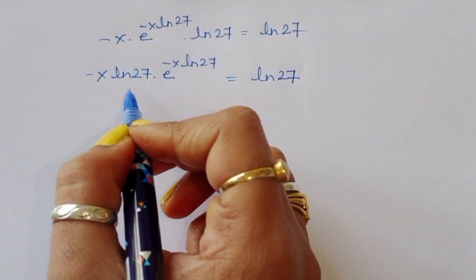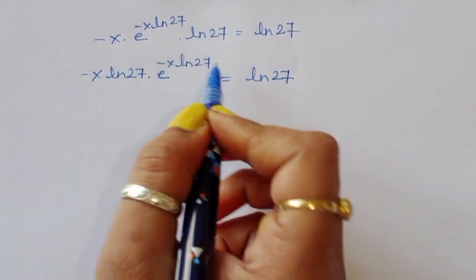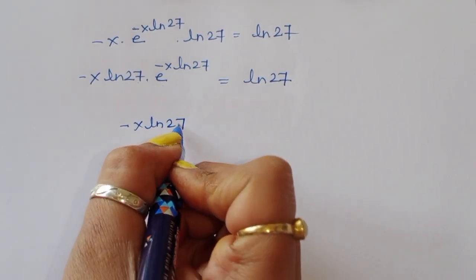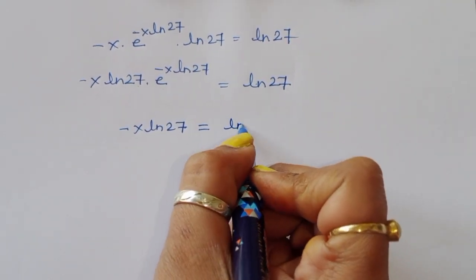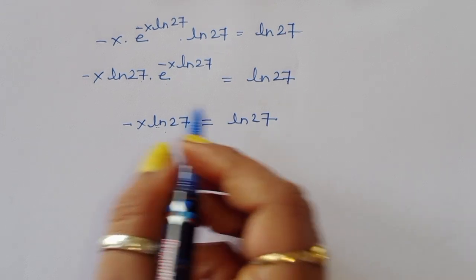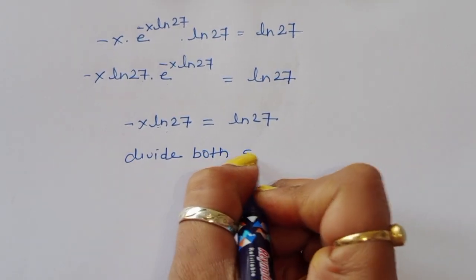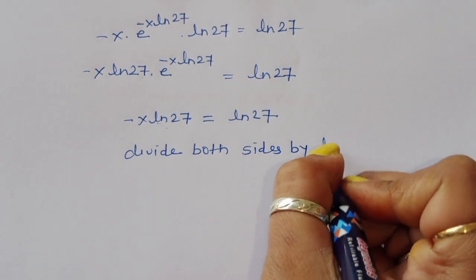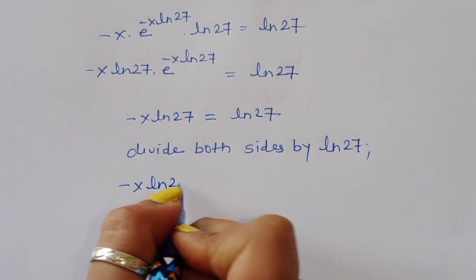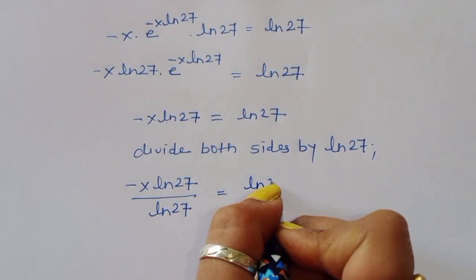We can see this is the Lambert W function form. Applying Lambert W: minus x times ln(27) equals W(ln 27). Since both sides equal ln(27), we have minus x times ln(27) equals ln(27). Now divide both sides by ln(27).